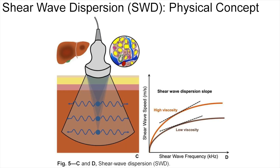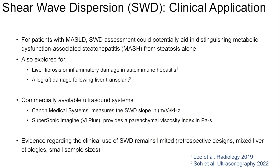Dispersion provides information on viscosity or dampening behavior of tissue. In viscoelastic tissue such as the liver, shear wave dispersion refers to changes in shear wave speed based on frequency. Liver with inflammation has higher viscosity than normal liver and therefore shows higher shear wave dispersion, as represented by orange and brown curves respectively on the graphic on the right. The frequency dispersion of shear wave speed provides information on the viscosity of a tissue; more viscous tissue demonstrates higher shear wave dispersion. For patients with MASLD, shear wave dispersion assessment could potentially aid in distinguishing metabolic dysfunction-associated steatohepatitis, or MASH, from steatosis alone. It has also been explored for liver fibrosis or inflammatory damage in autoimmune hepatitis, as well as allograft damage following liver transplant. Shear wave dispersion has been implemented on clinical scanners from two manufacturers; however, evidence regarding its clinical use remains limited.